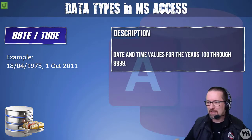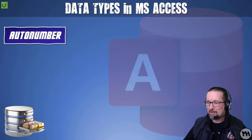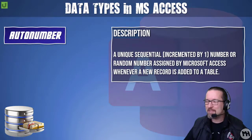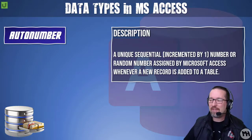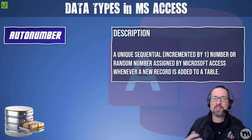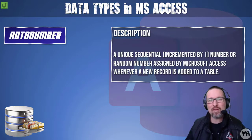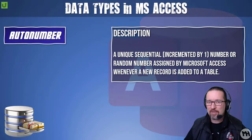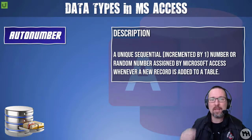Auto number is a unique sequential number, incremented by one, or a random number assigned by Microsoft Access whenever a new record is added to a table. Every record in the database must be unique, so when you create a new record, Access automatically adds a new number to make it unique, incrementing by one with each record you create.